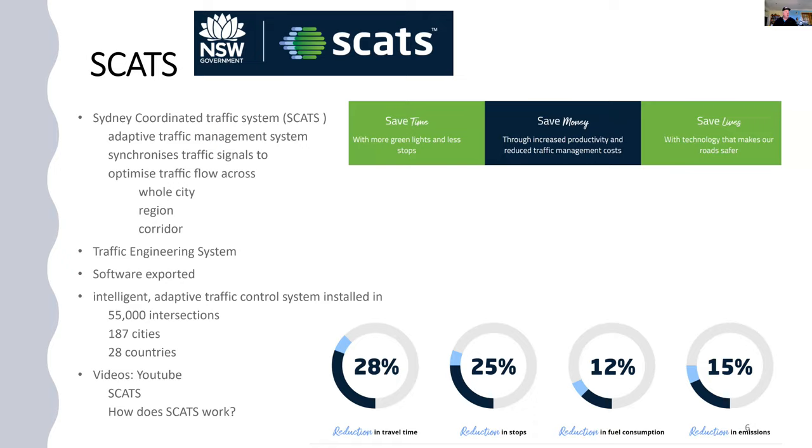It's an example of traffic systems engineering and part of a wider area of transport called intelligent transport systems. The software created by the NSW government is exported and installed in 55,000 intersections throughout the world in 28 countries. SCATS saves time by making the control of traffic signals more efficient. It saves money because there's minimal delays and reduces petrol consumption. From a climate change perspective it also reduces emissions.